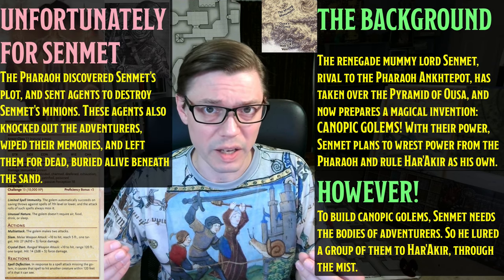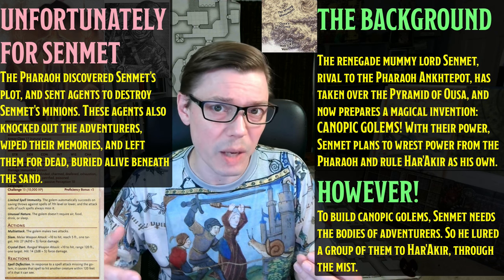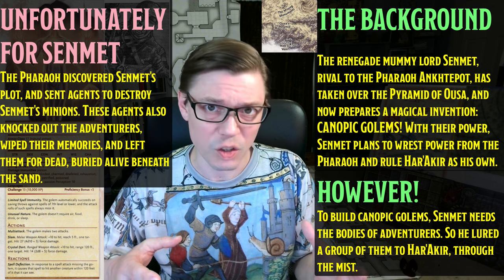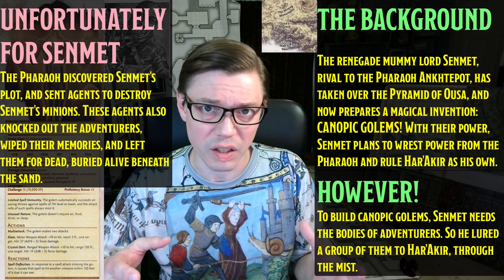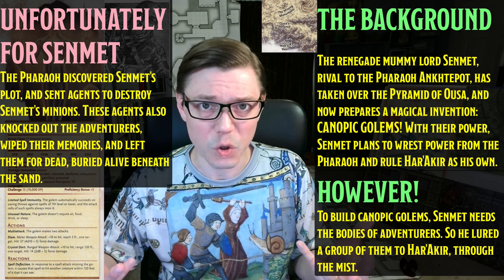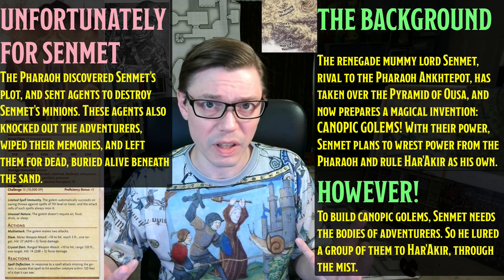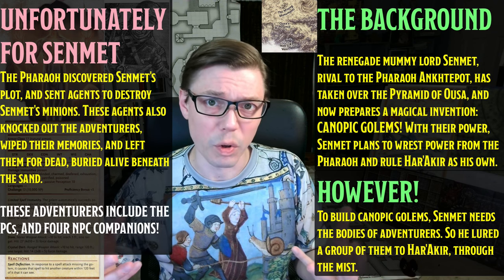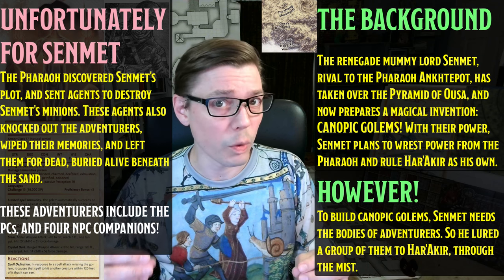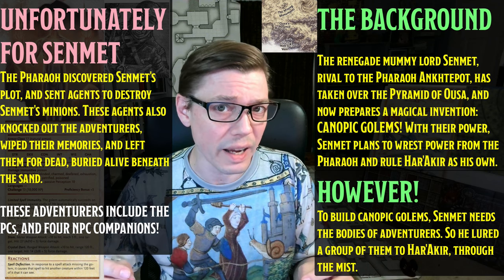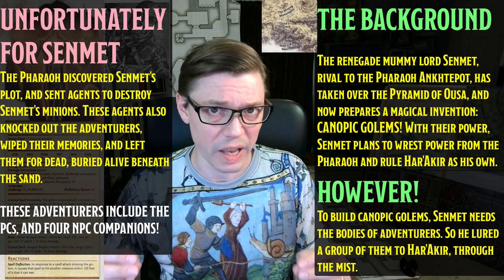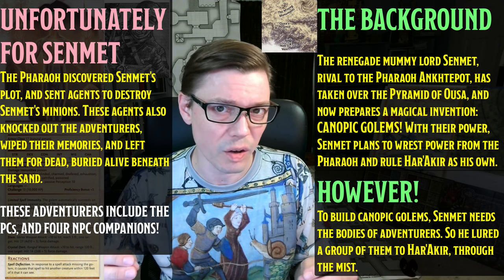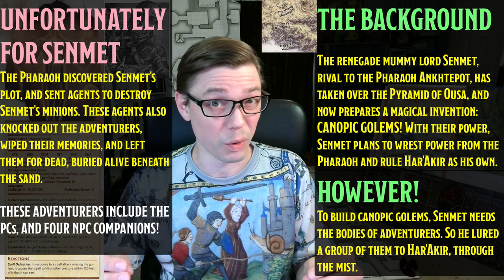Unfortunately for Senmit, the Pharaoh Onctopot became wise to Senmit's plans and intercepted the adventurers, destroying Senmit's servants and agents, as well as knocking the adventurers unconscious, casting a spell to wipe their memories, and leaving them for dead after burying them alive in the desert. Those adventurers include the PCs along with four NPC allies, and it is up to the adventurers and their allies to follow a series of clues across Har Akir, eventually to find a horrifying truth.